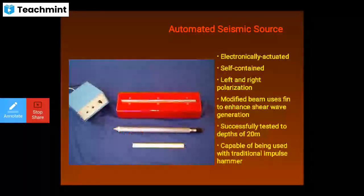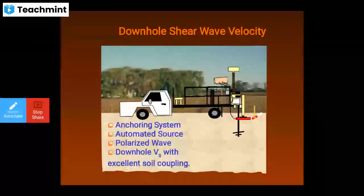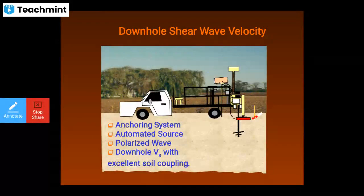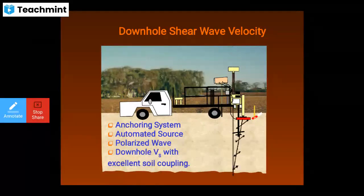An automated seismic source is electronically activated, self-contained with correct polarization. A modified beam uses fins to enhance the shear wave, successfully tested to depths of 20 m, and is capable of being used with traditional impulse hammers. The downhole shear wave velocity setup includes an anchoring system, automated source, polarized waves, and downhole Vs with excellent soil coupling.